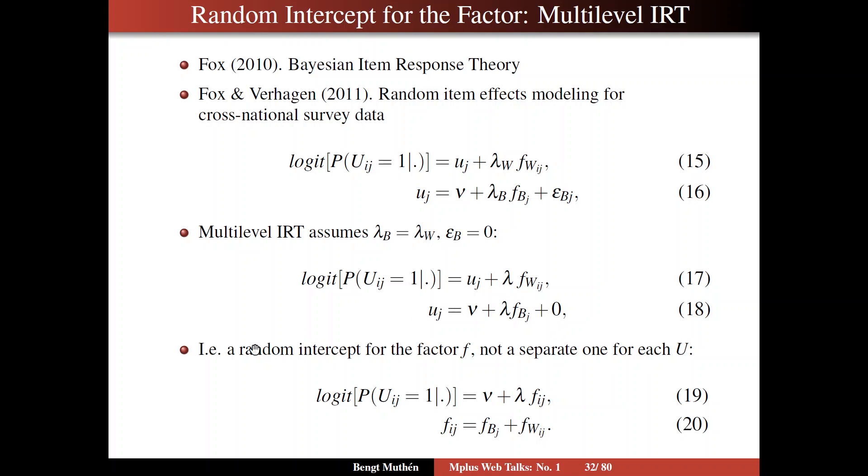Now, if you write it that way, then you can think of this as a random intercept for the factor. That is, you can rewrite 17 and 18 as 19 and 20 by writing lambda times Fij, where Fij is the sum of the between and the within variation.